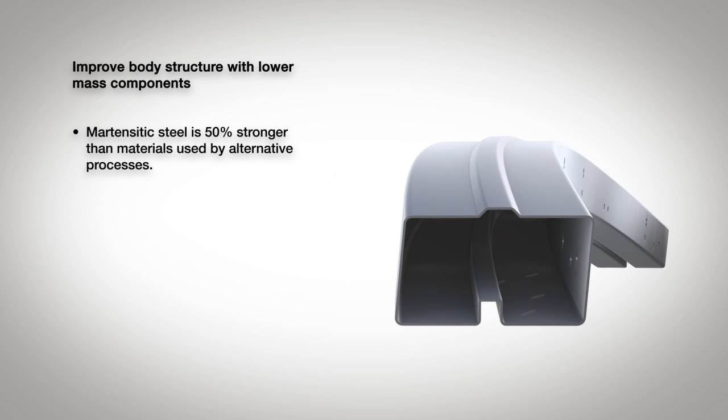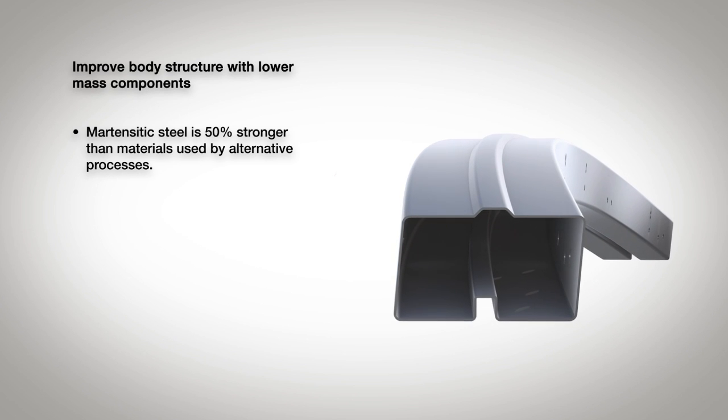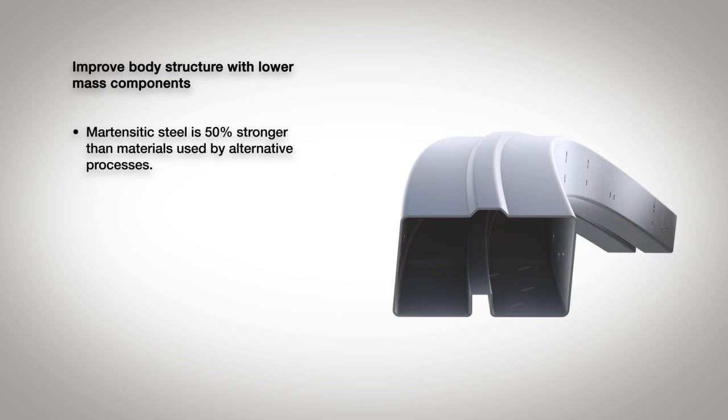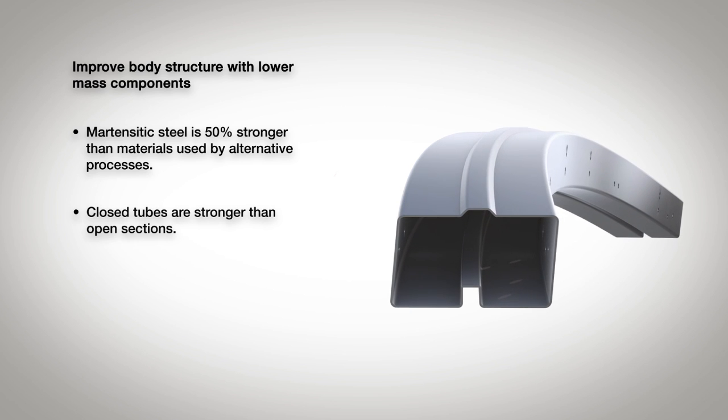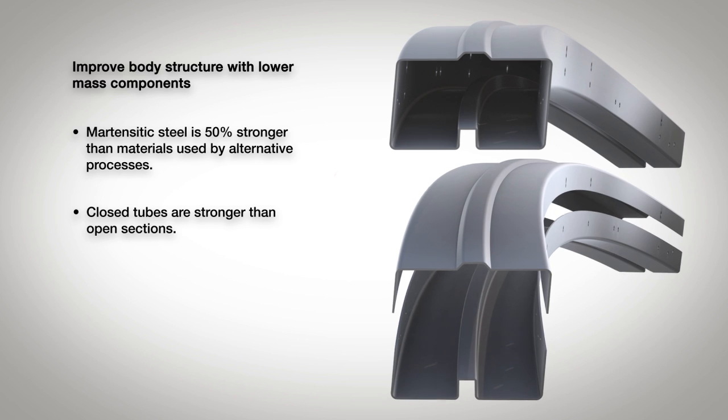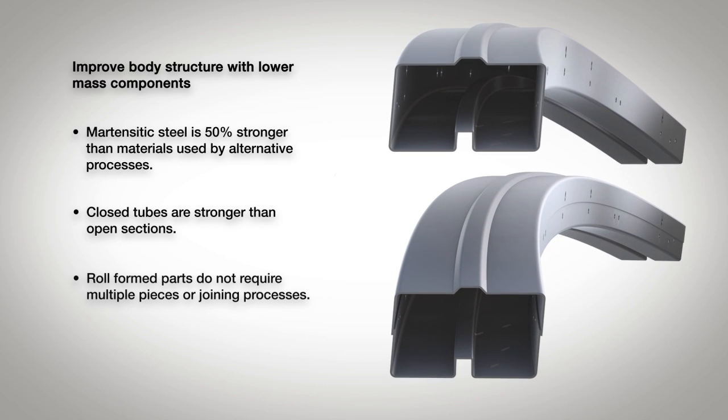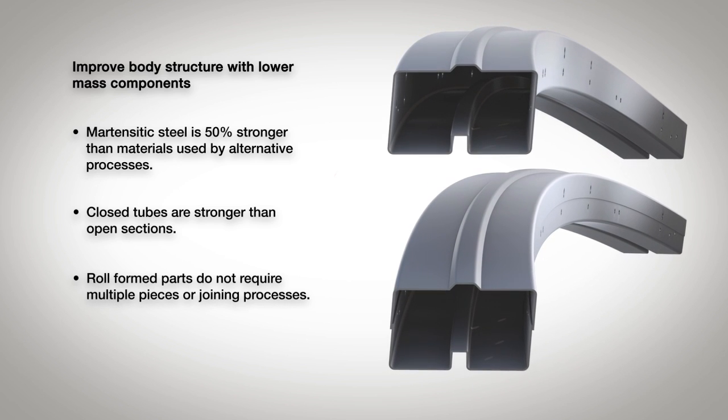Martensitic steel used in roll forming is 50% stronger. Other forming processes are limited to 980 megapascals. Closed tubes have greater strength than open sections. Roll formed parts do not require multiple pieces or joining processes.